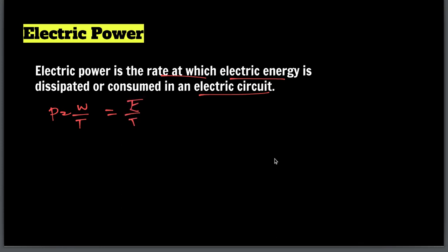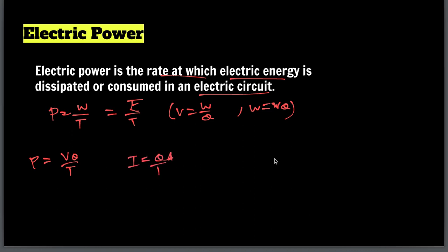Work is nothing but energy used. We know V = W/Q, so W = VQ. Substituting into P = W/t gives P = VQ/t. Since Q/t = I (current), we get P = VI. This is an important formula.